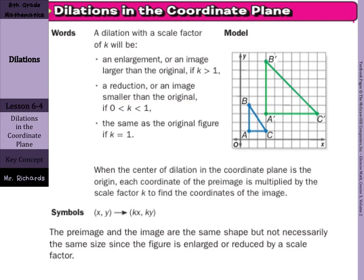So now with dilations, a dilation with a scale factor of k will be an enlargement, a reduction, or the same. If k is greater than 1, it's an enlargement. If k is between 0 and 1, it's a reduction. And if it is just 1, it's the same.